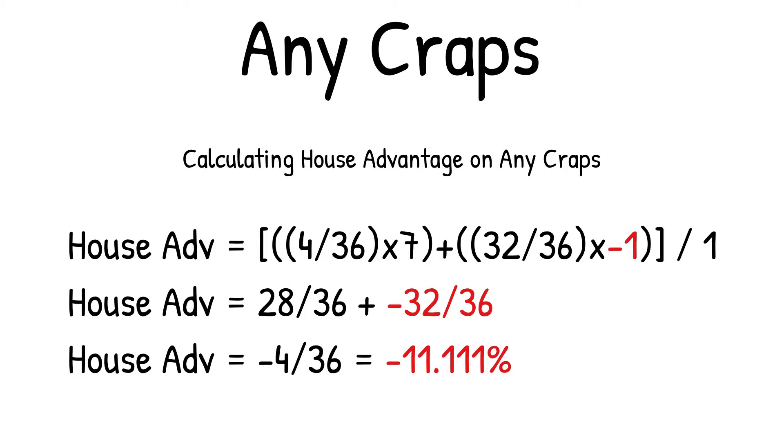The result is minus 4 out of 36, which equals minus 11.111% house advantage.